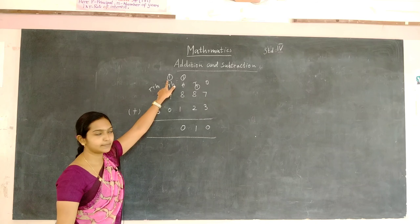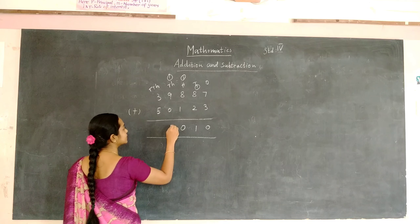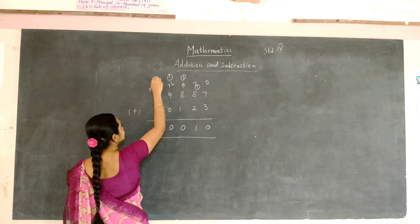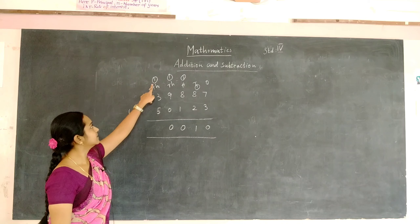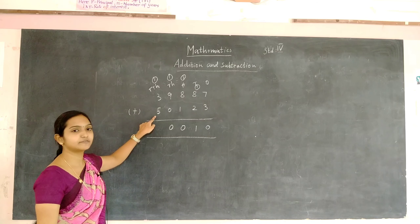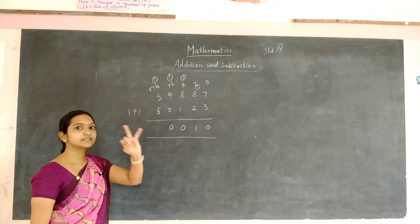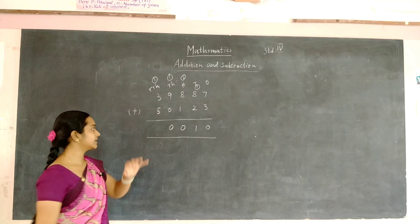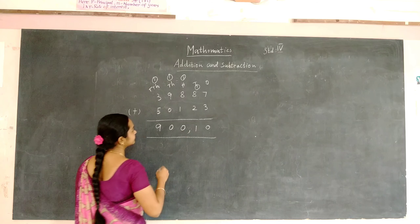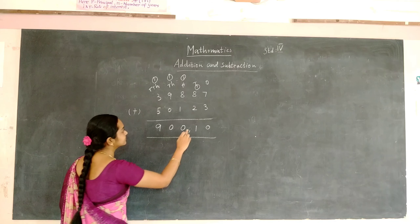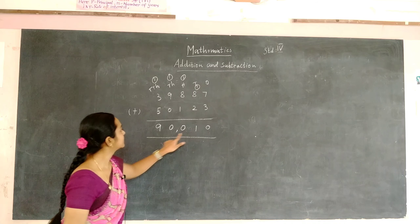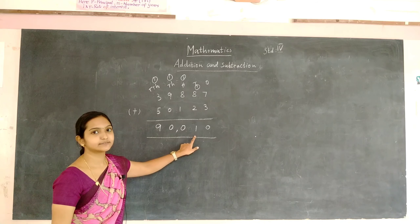9 plus 1 will be 10. So write 0 here and 1 will be carried to the 10,000's place. 3 plus 1 will be 4. We are going to add 4 and 5, that is 5, 6, 7, 8, and 9. So the answer is 90,010.